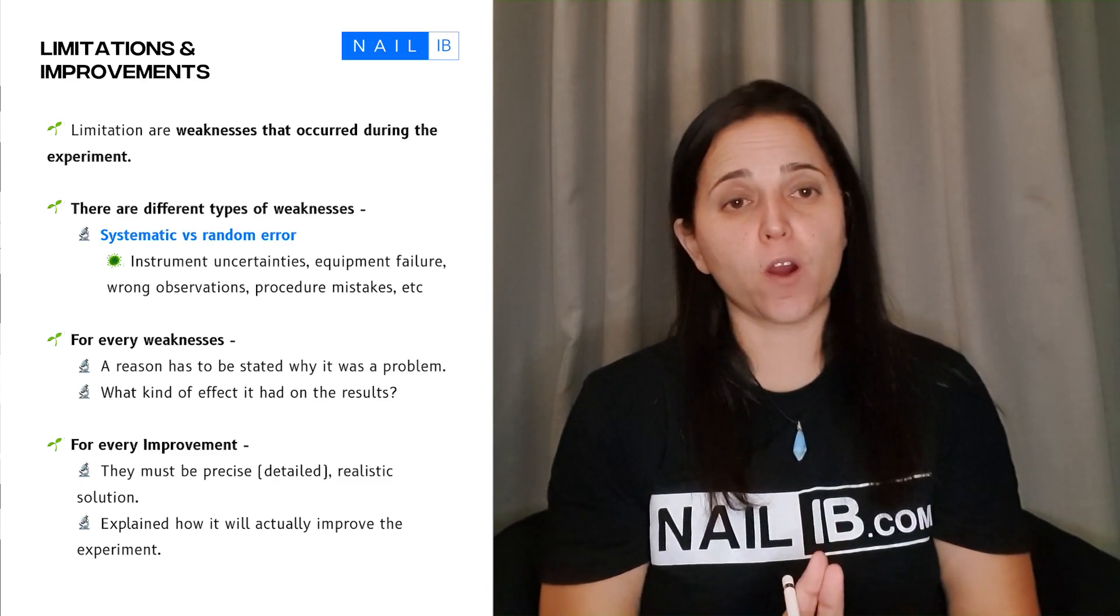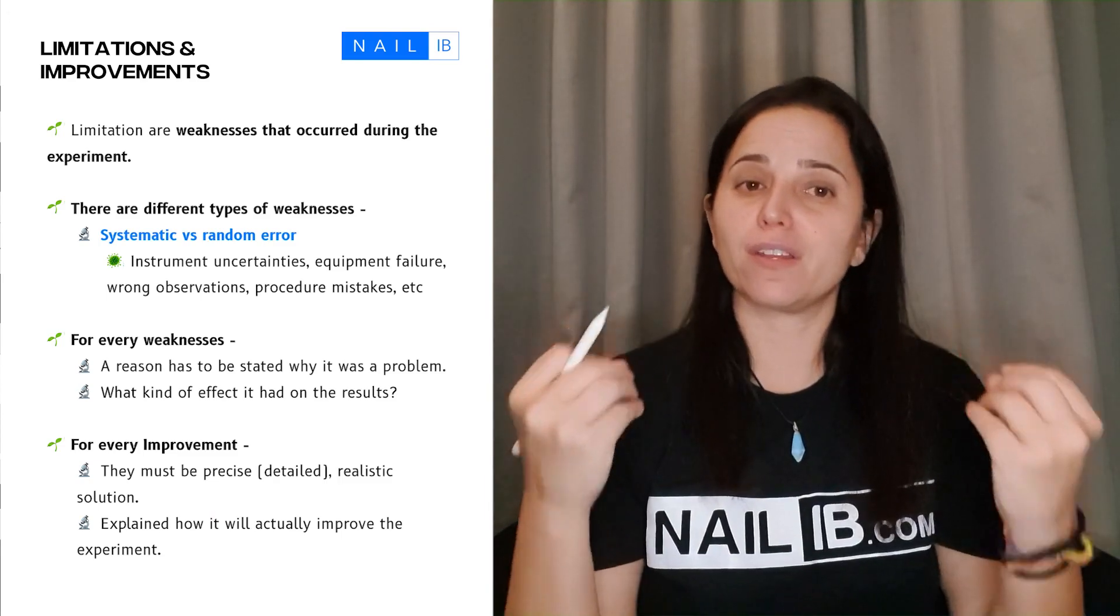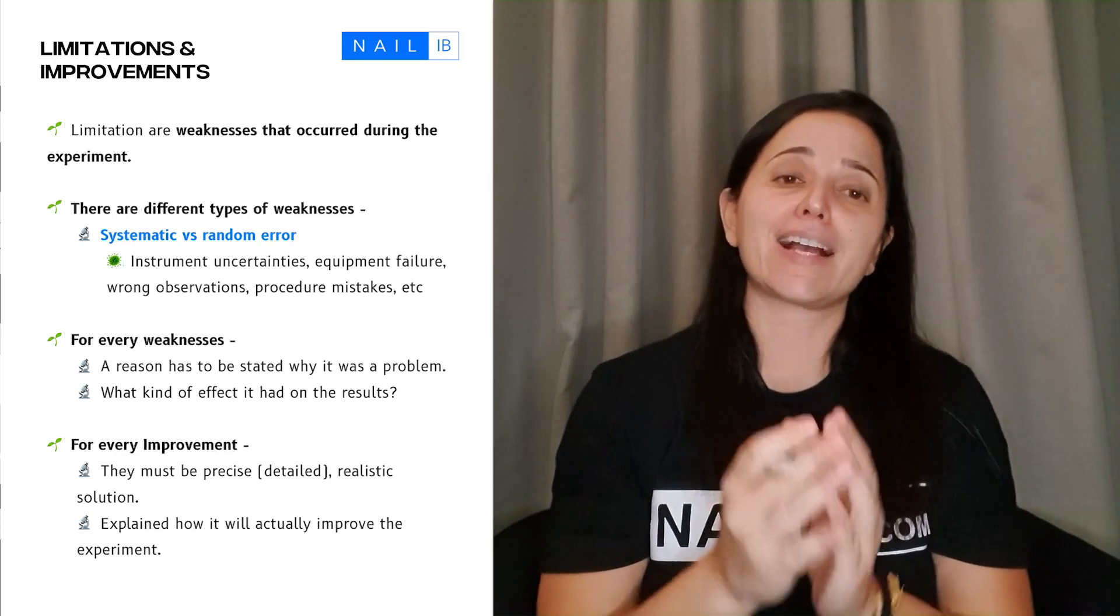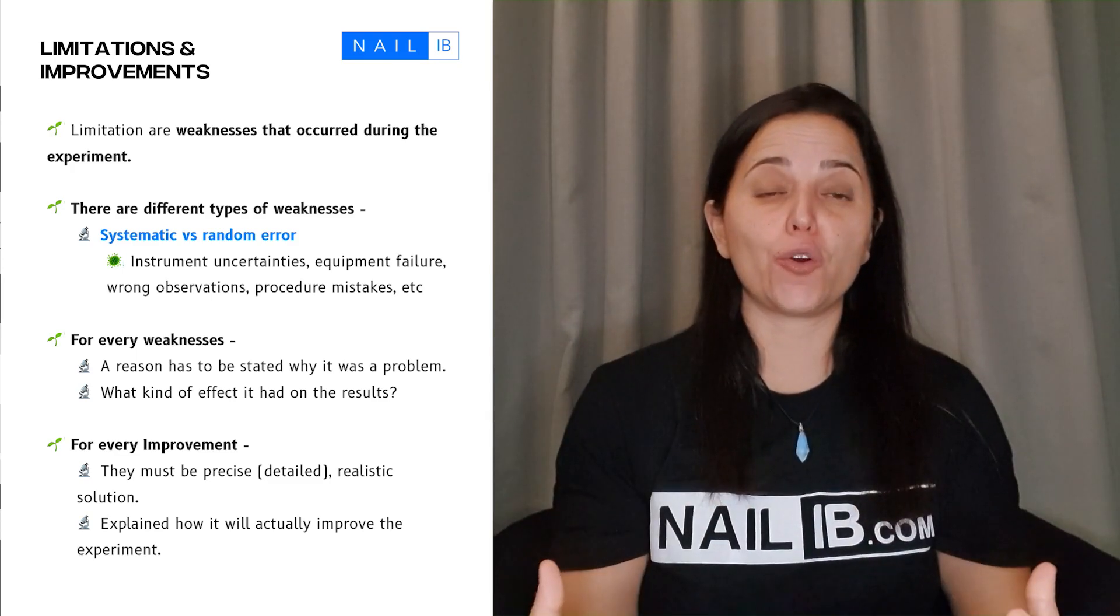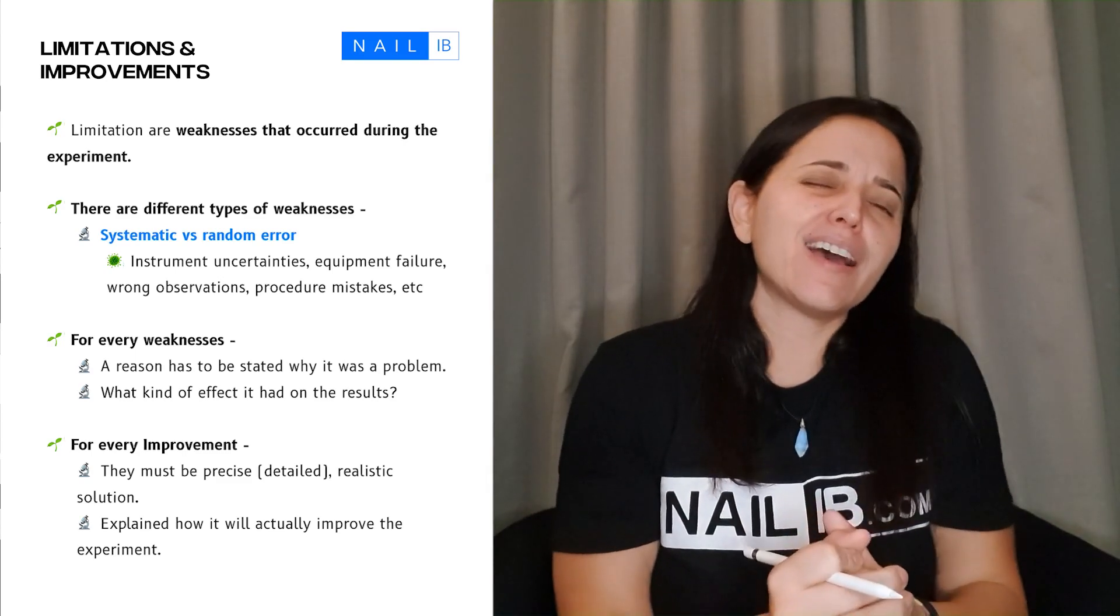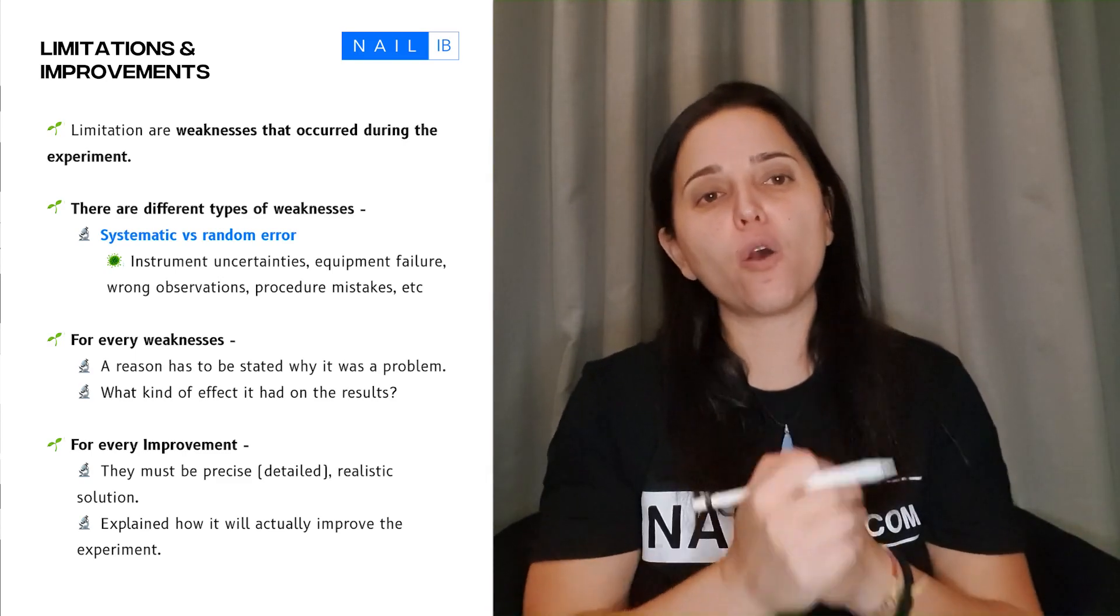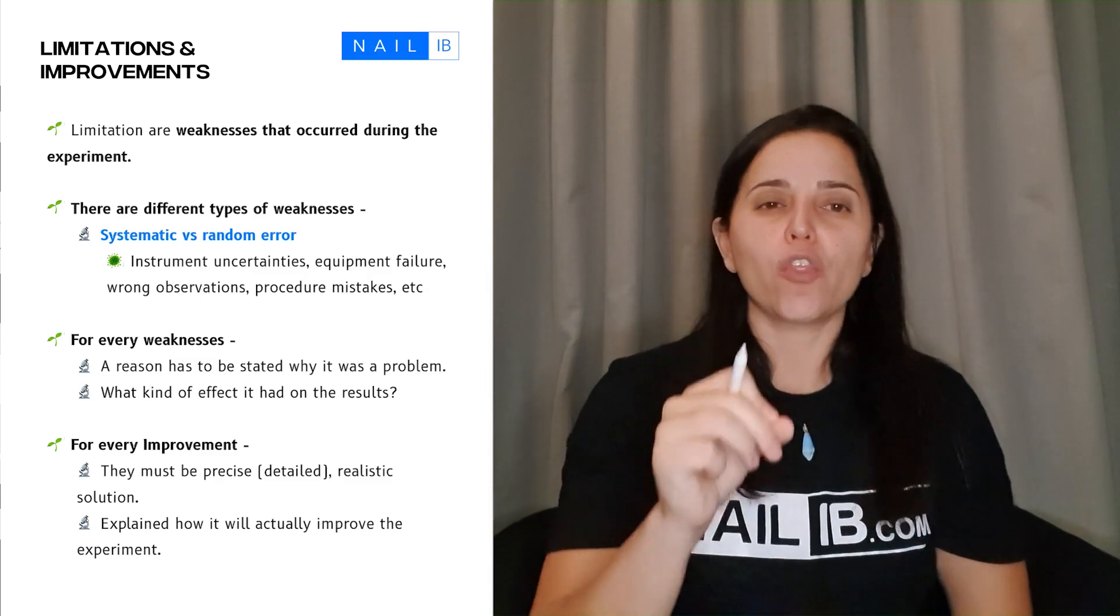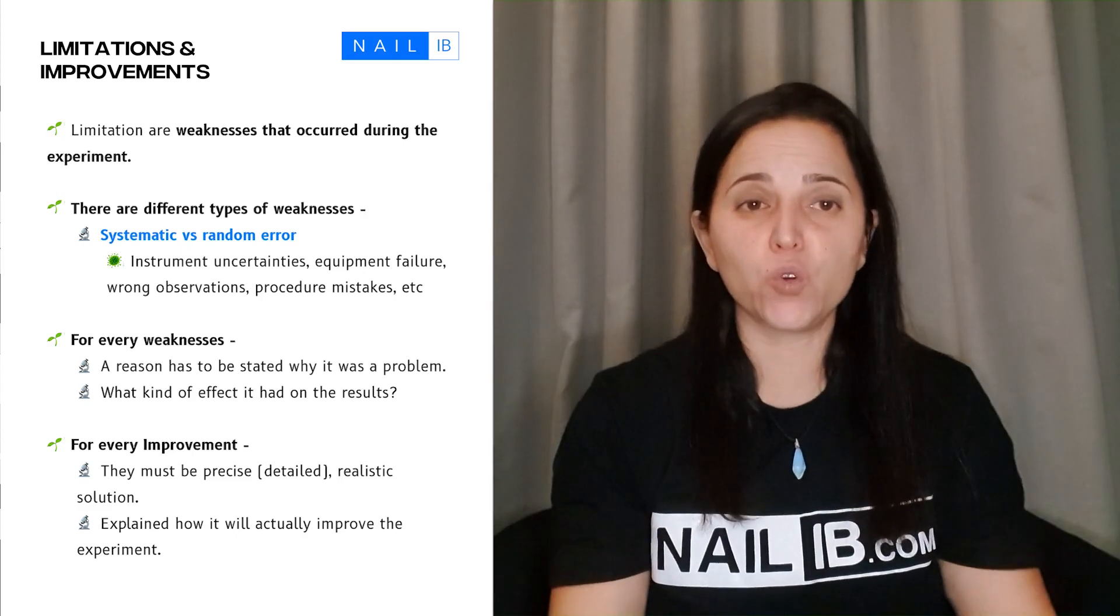Hi, so here's the second part of the conclusion evaluations, which is about limitations and improvements. This is a very important part because this is exactly where you're letting the teacher know that there is a way to fix your lab. Not always, and I'm going to tell you not always, are we going to be able to control the control variables.